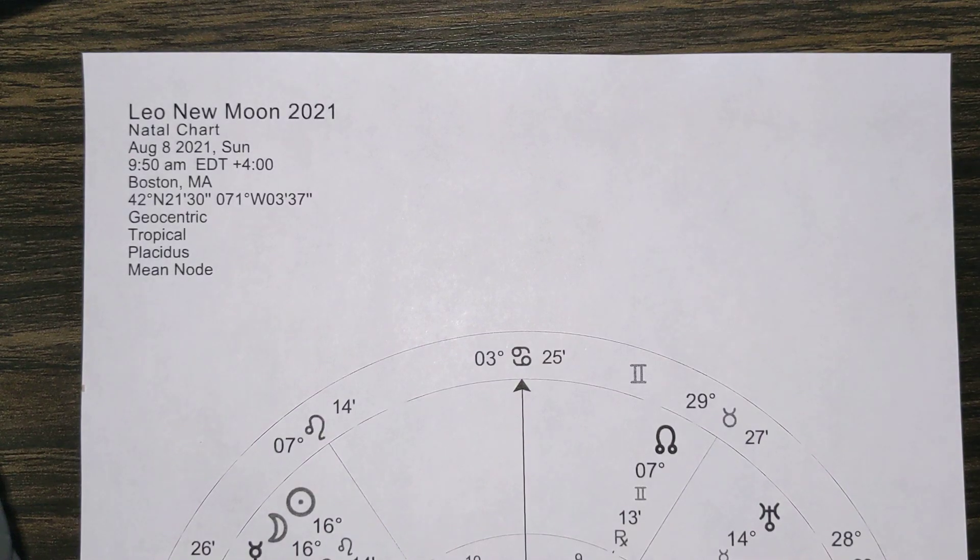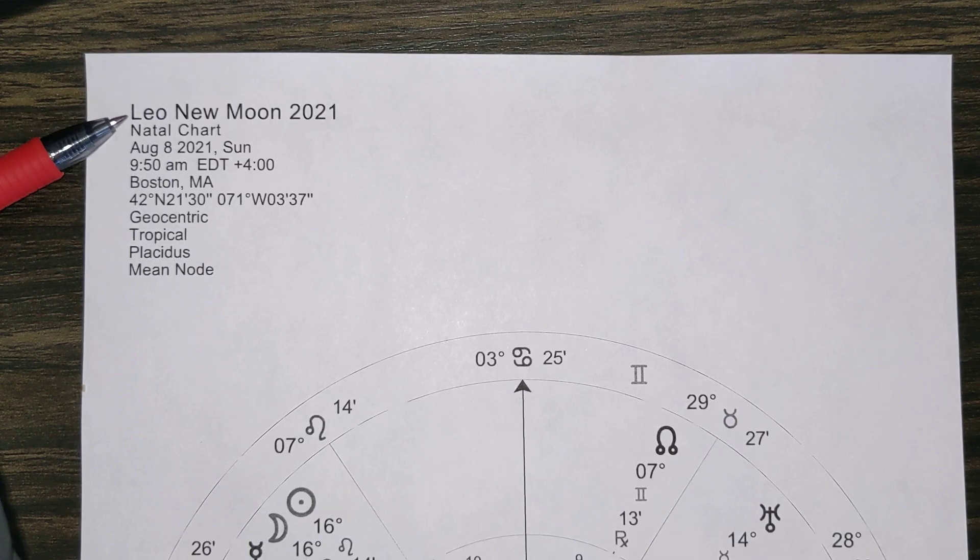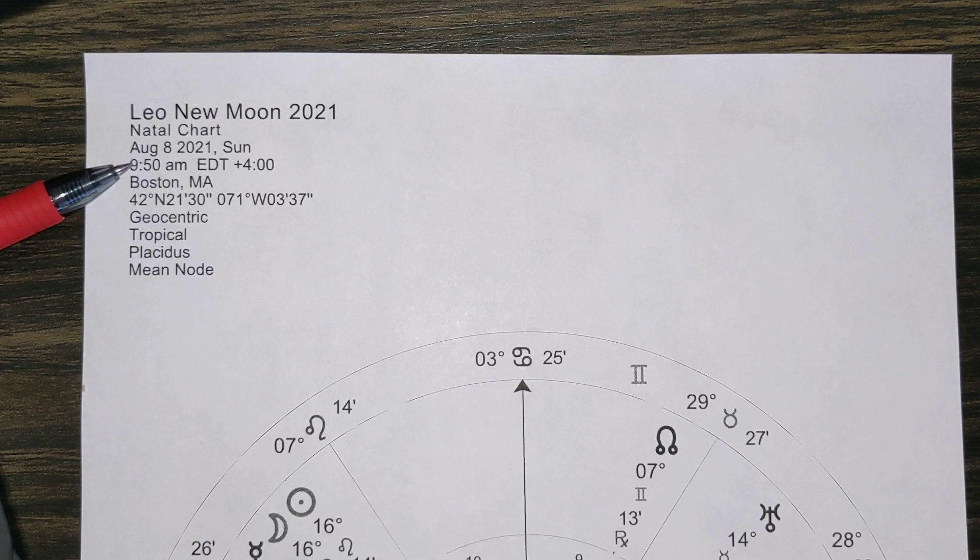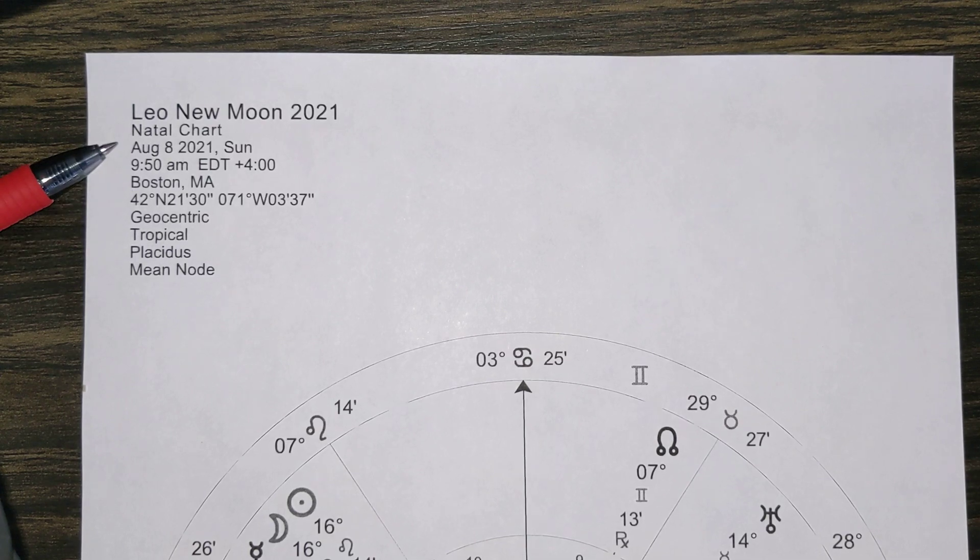Hey, this is Molly and welcome back to my YouTube channel as we take a look at the Leo New Moon happening on August 8th, 2021 at 9:50 a.m. Eastern Time, so be sure and adjust for your location on the planet.